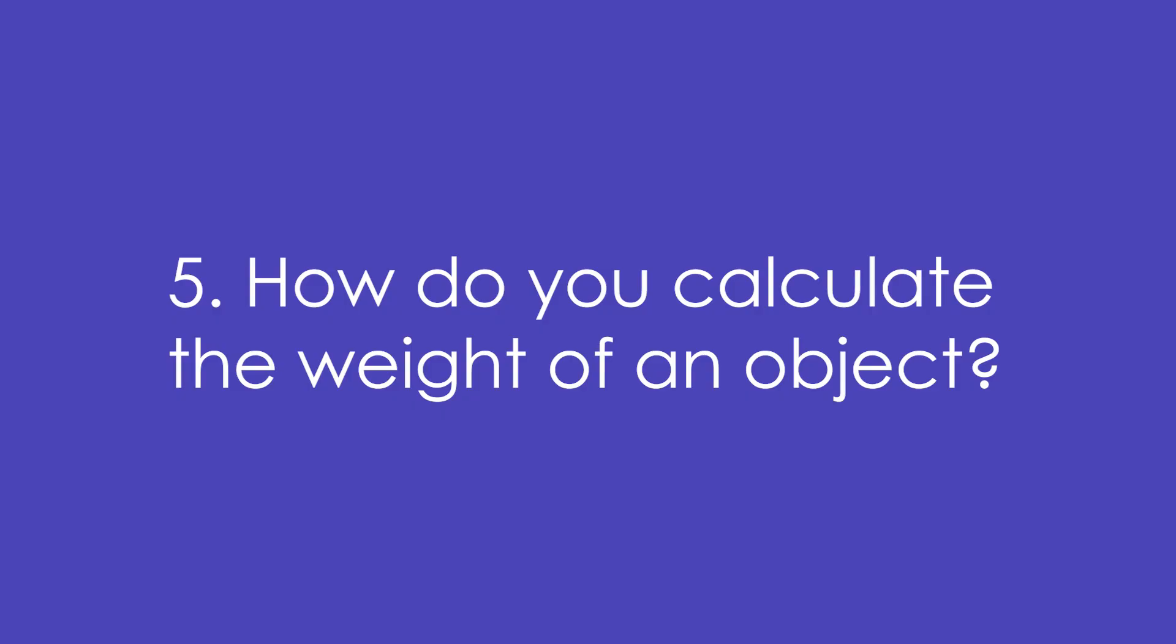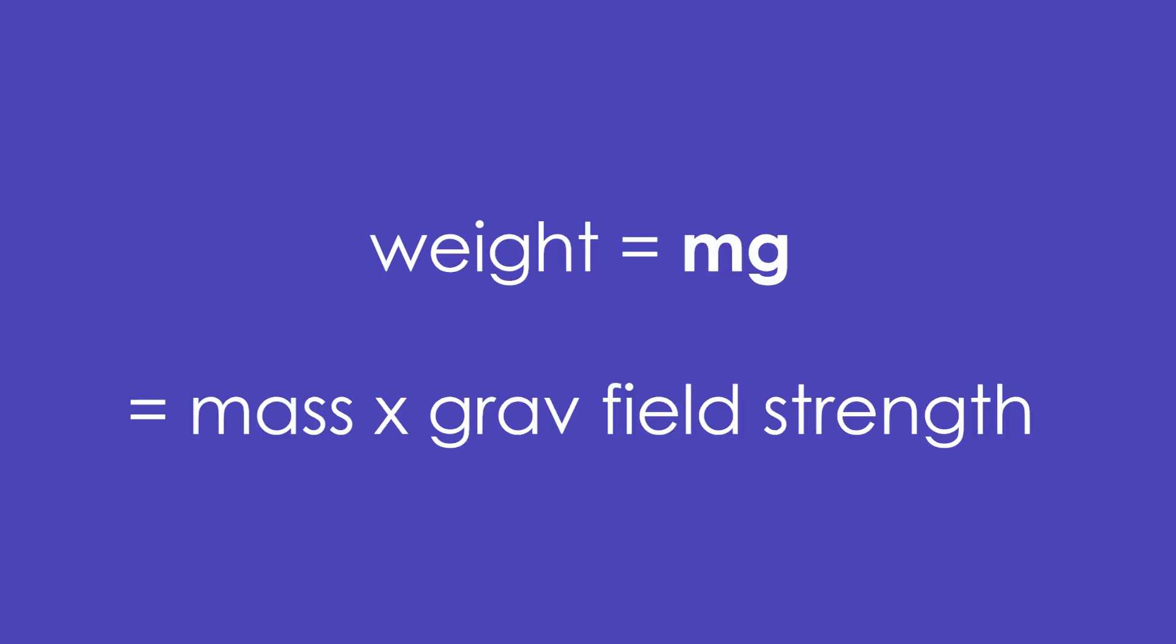5. How do you calculate the weight of an object? Weight is equal to MG, mass times gravitational field strength, 9.81.